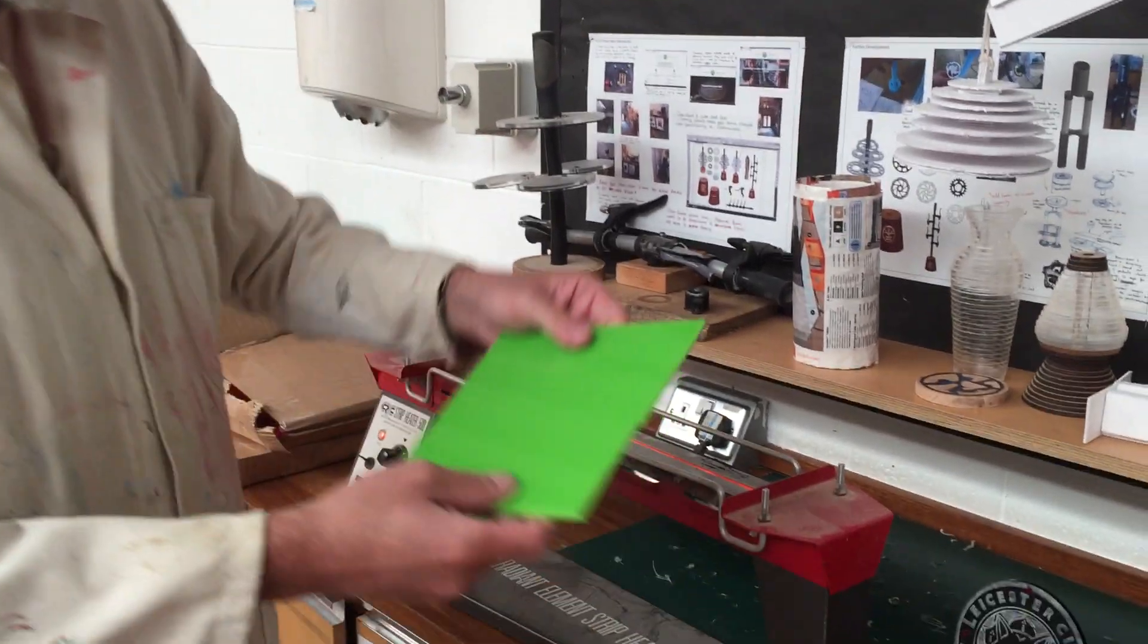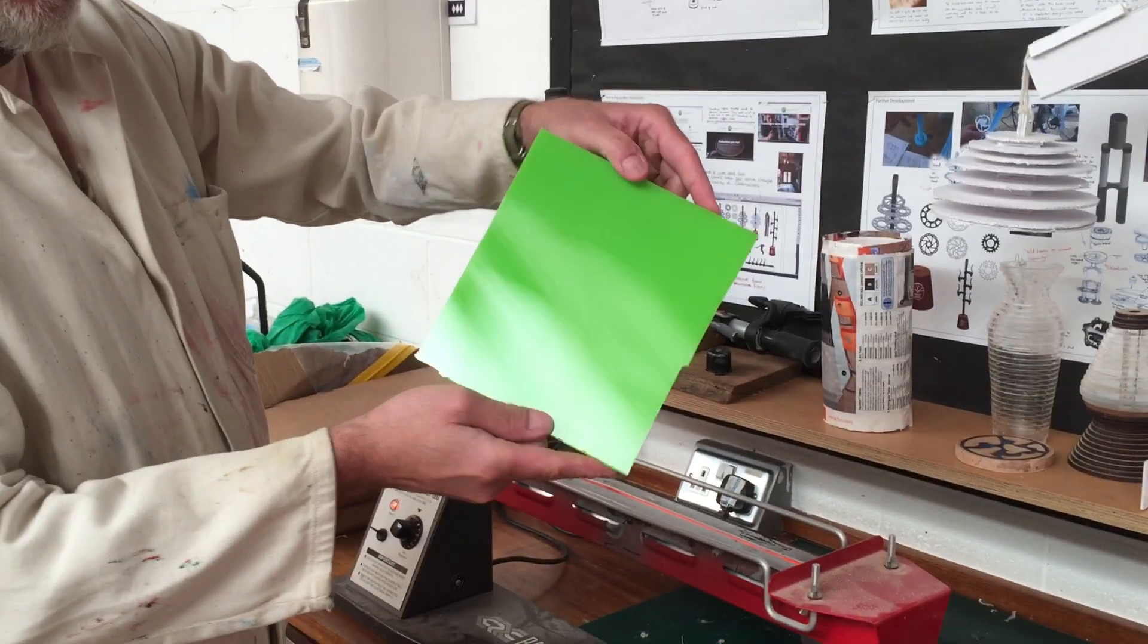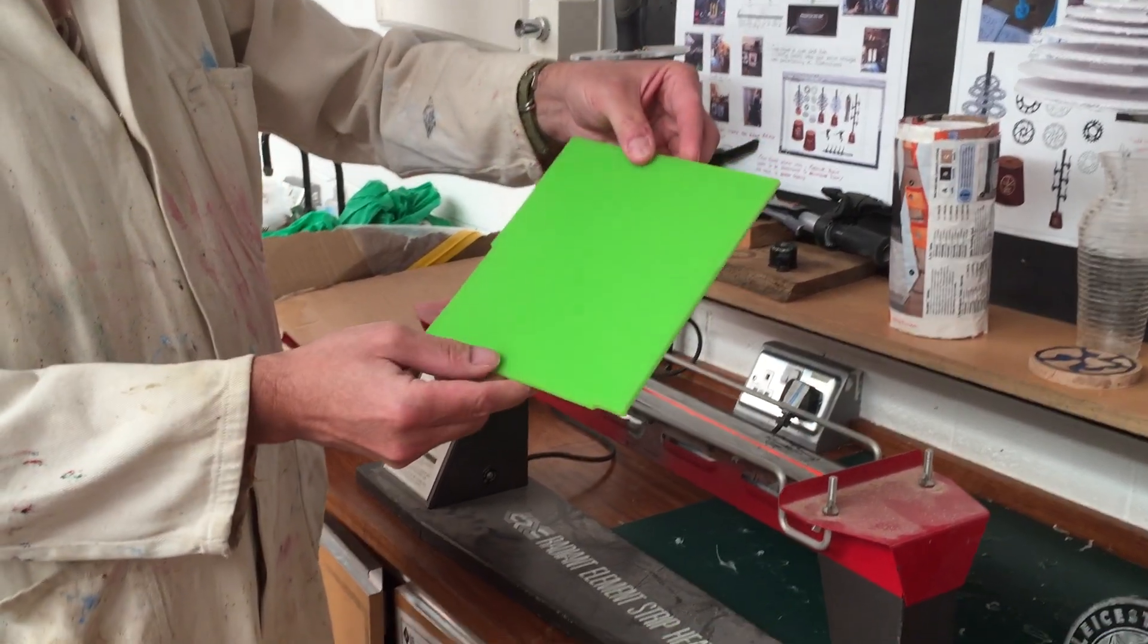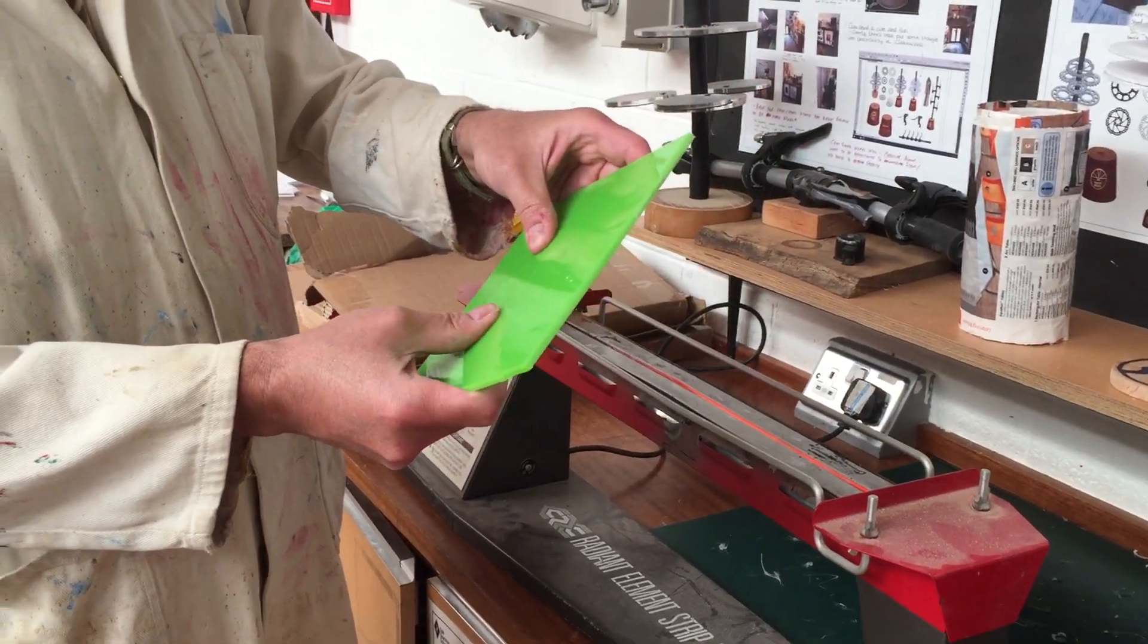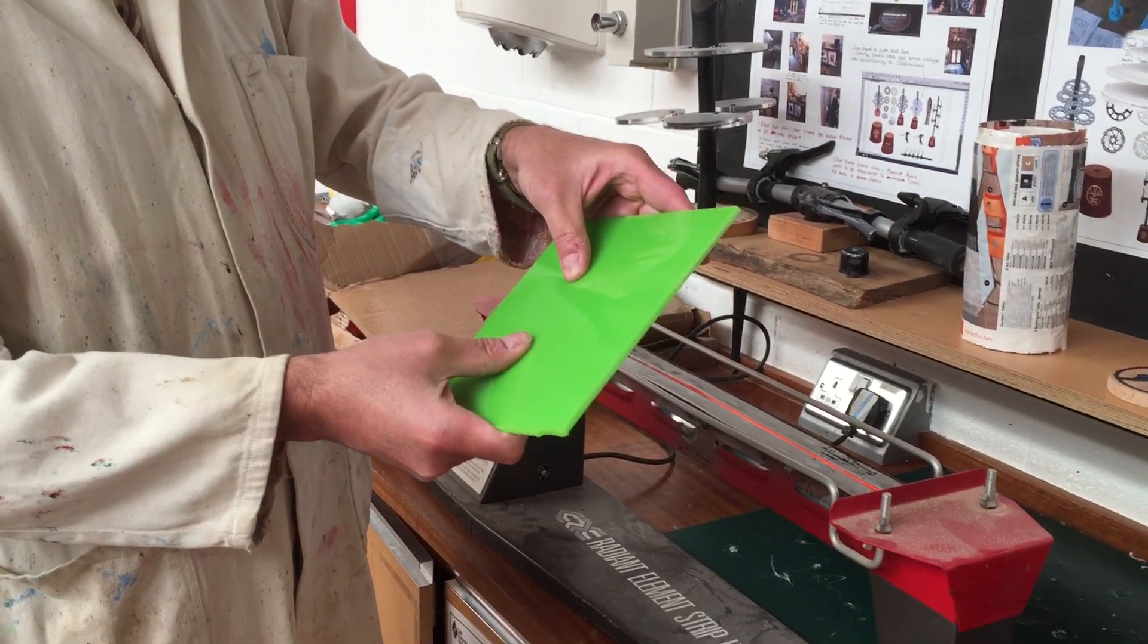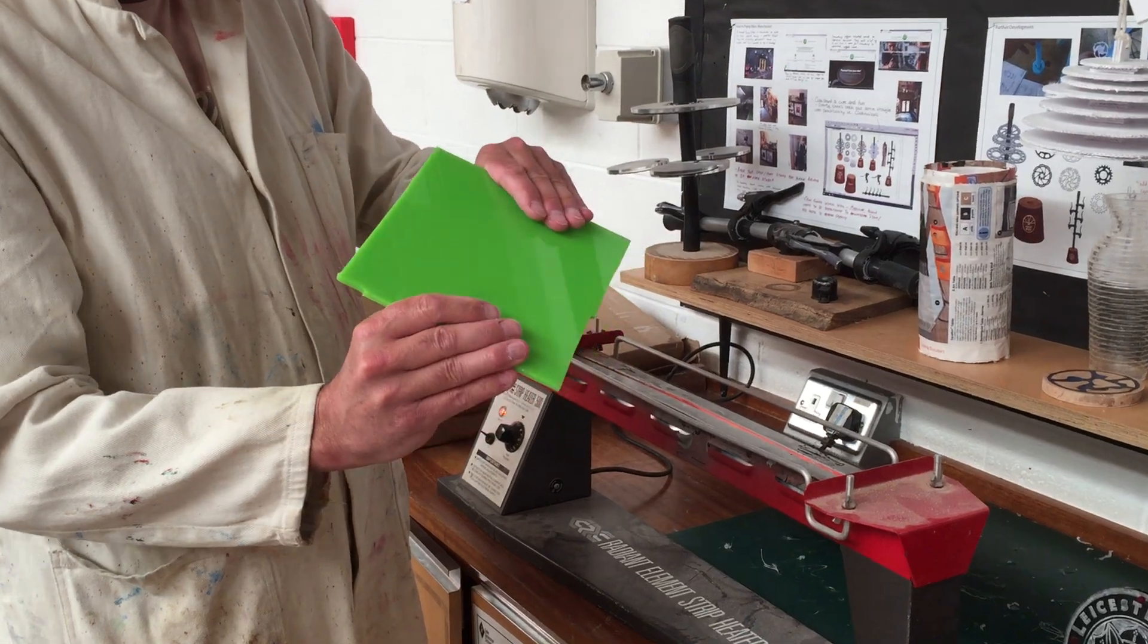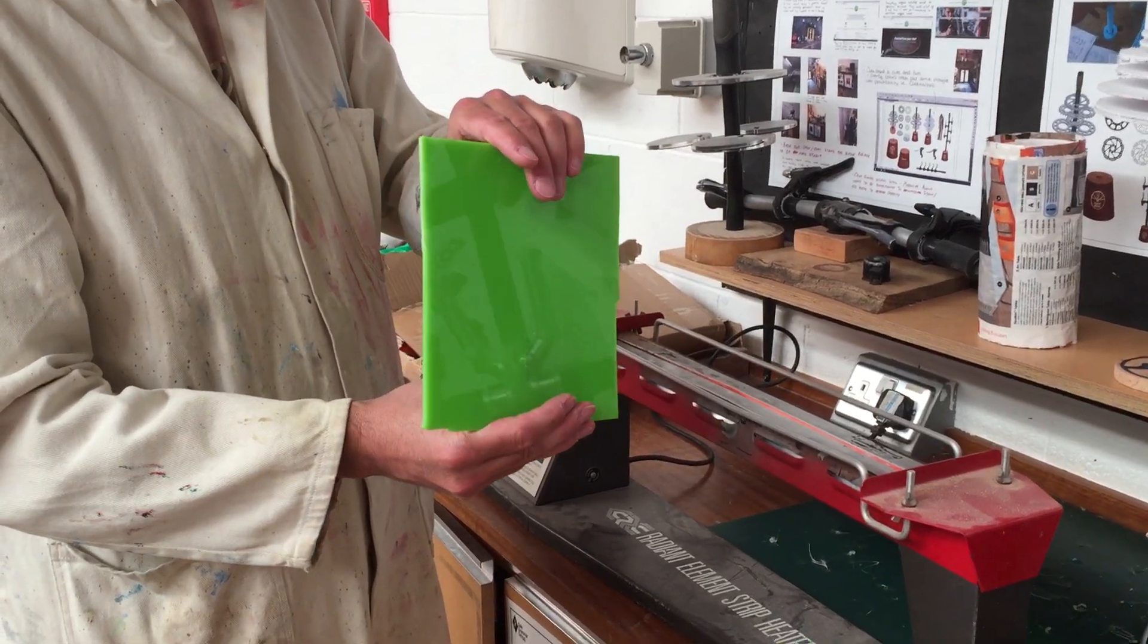Now we start off with this scrap piece of acrylic, which is a thermo forming polymer. Thermo forming means that it can be reshaped if it is gently heated—it can be reset to a new angle or a new shape by application of gentle heat.